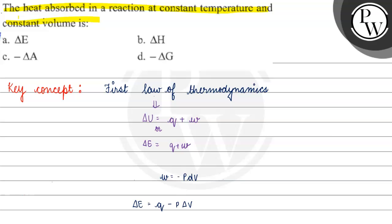If we have volume constant, then the change in volume will be zero. So we have Q, which is equal to internal energy. When we have volume constant, heat absorbed in a reaction at constant volume is delta E, the change in internal energy.